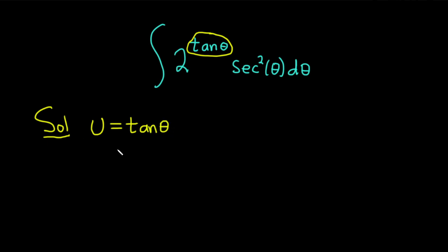And then now we'll just differentiate both sides. Differentiating u, we get du. And the best part is the derivative of tangent is secant squared. This is going to be secant squared of theta d theta.